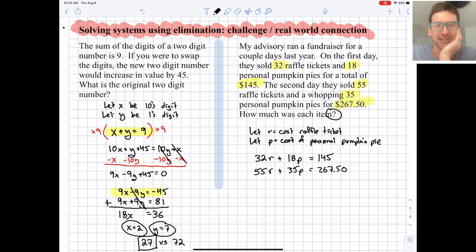And the second day, we have 55r plus 35p is $267.50 in revenue. Okay, I'm looking ahead. I can tell we're going to have some big numbers to deal with, and that's okay. Let's pull out your calculator, settle in, and get ready.